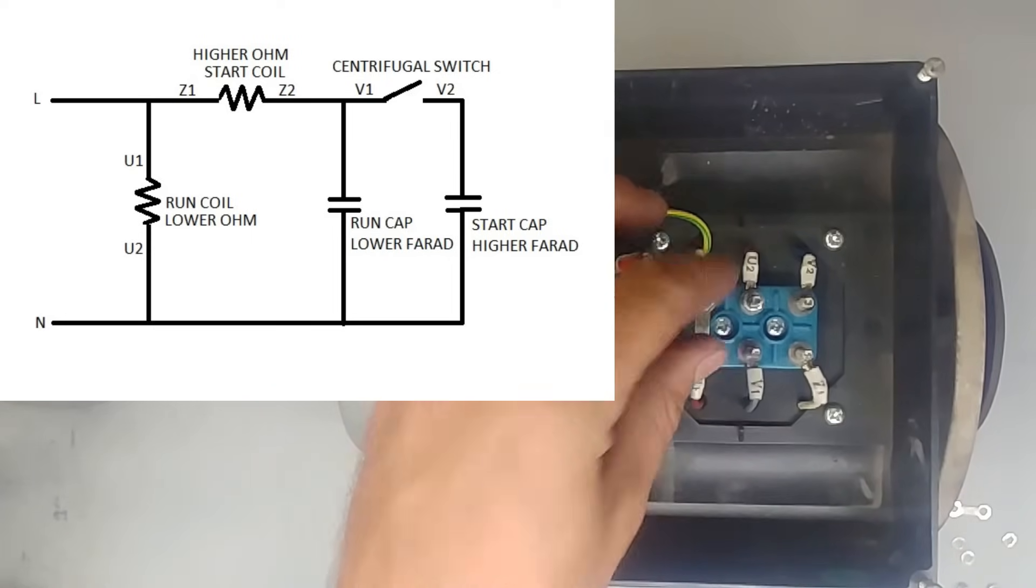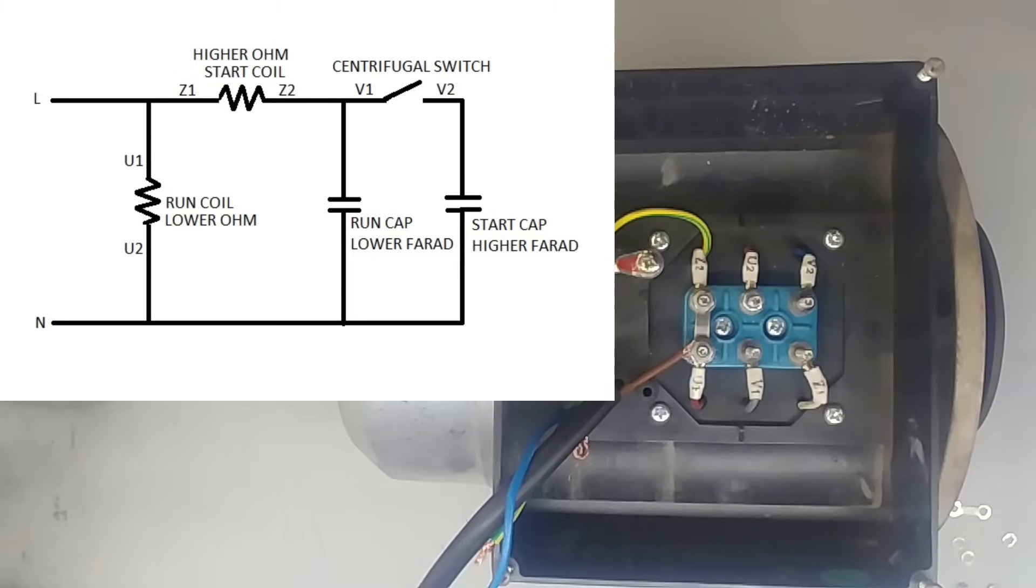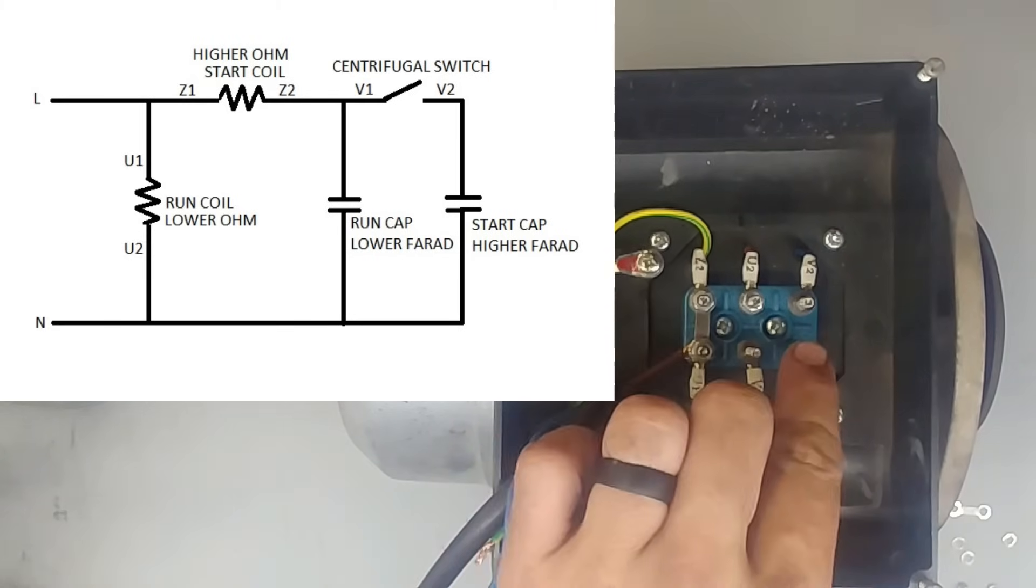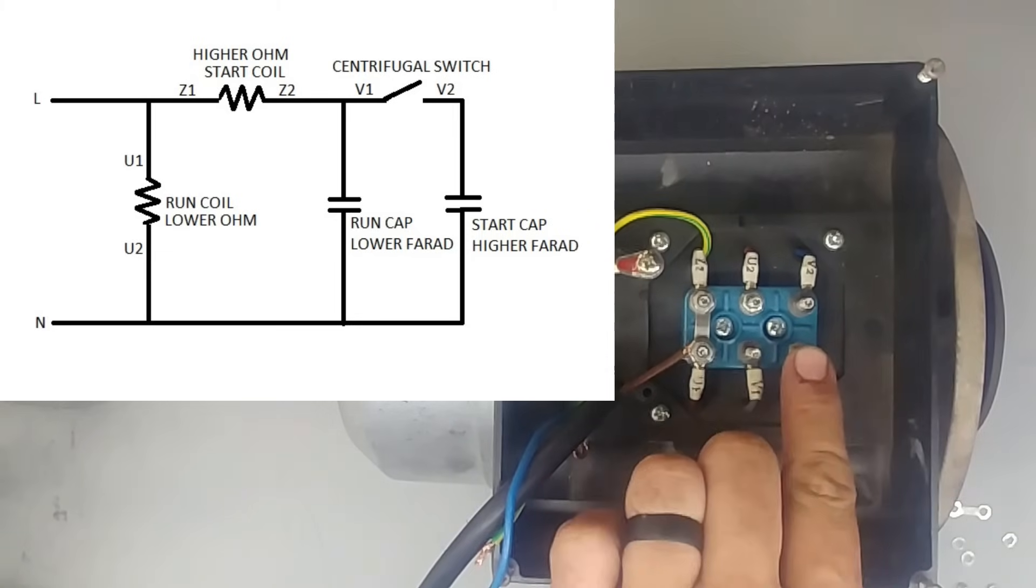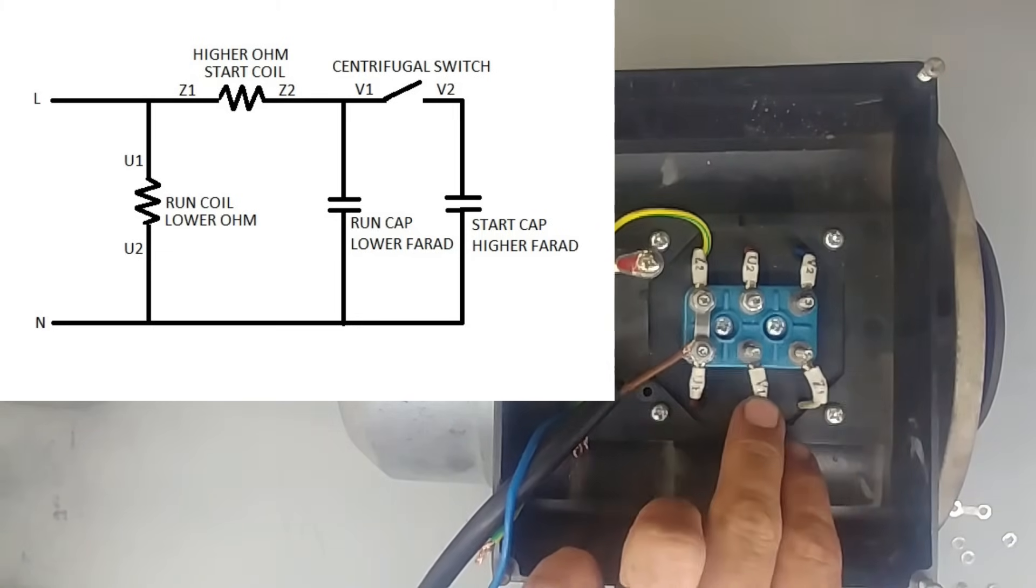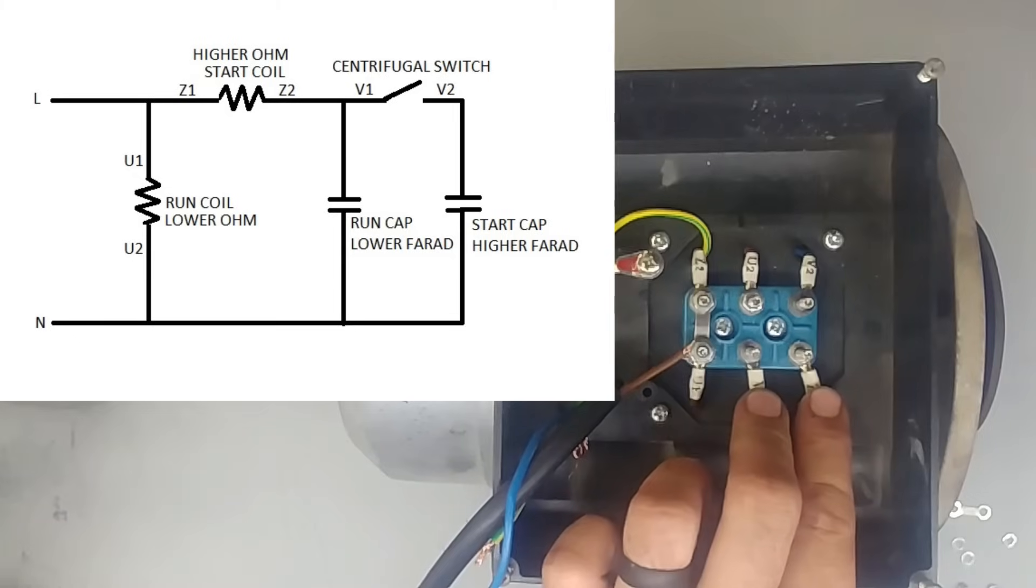Then the other point of the starting coil is going to be connected to the centrifugal switch. So the other point of my Z is going to be connected to the centrifugal switch V. This could be this point here. You could use this with a bridge as well, as well as a capacitor.